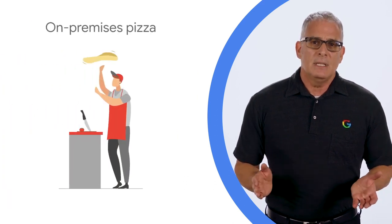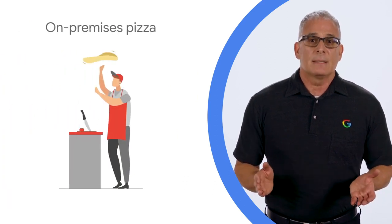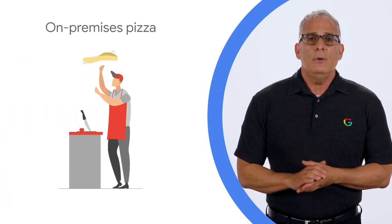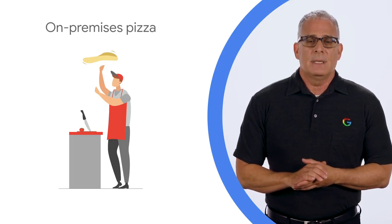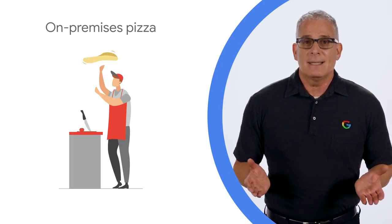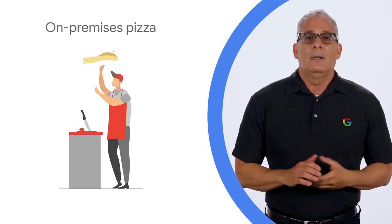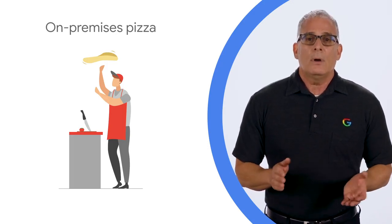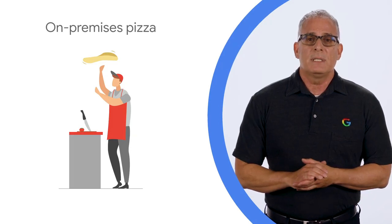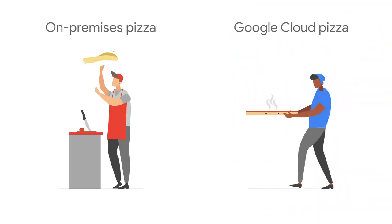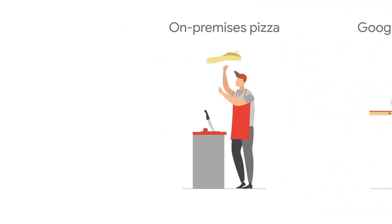Let me use an analogy to explain this. Let's say there are two main ways for your business to get pizza. One, you make it — we'll call that on-premises pizza. Two, Google makes it — we'll call that Google Cloud Pizza.